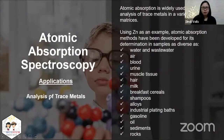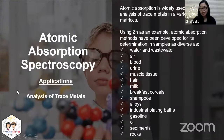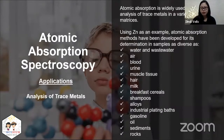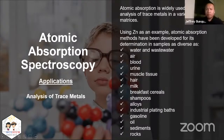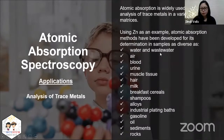AAS is mostly used for analysis of trace metals in a variety of matrices. For example, for zinc, there is a long list of matrices — methods have been developed for the determination of zinc. You could use AAS to measure trace metals in general, whether in wastewater, air, blood, urine, and so on.